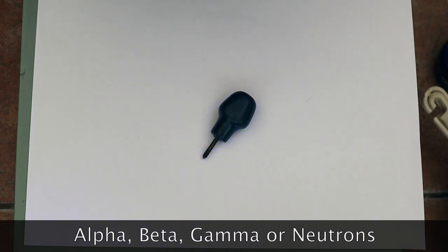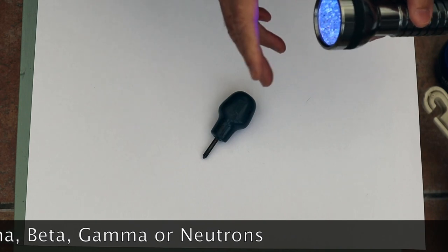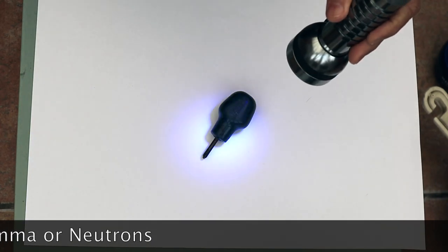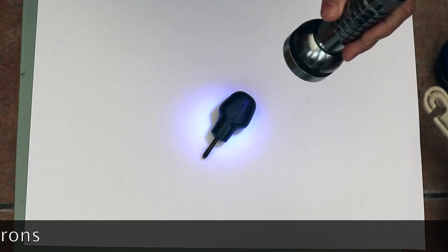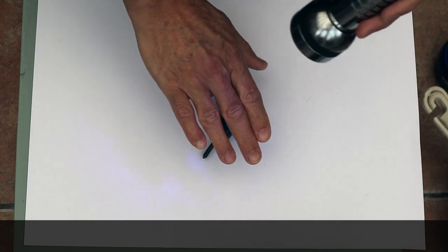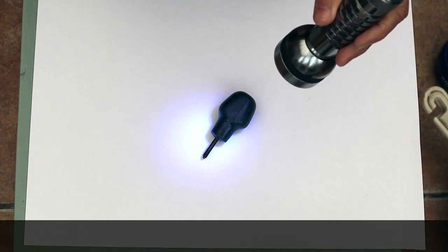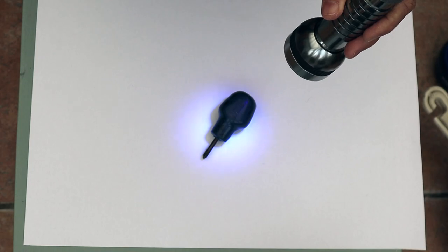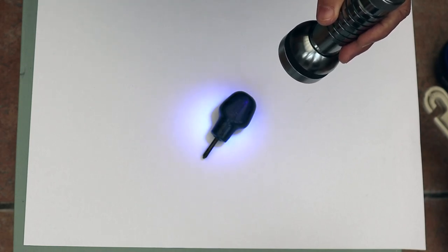So here we have what we're saying is a radioactive source, and now we're irradiating the object in the same way that we could irradiate a part of a human. This is often used for sterilizing in hospitals.